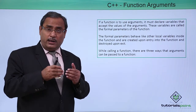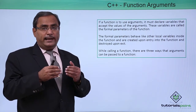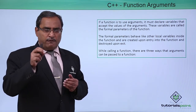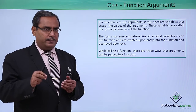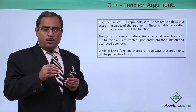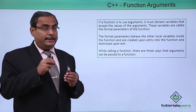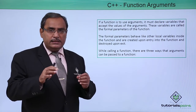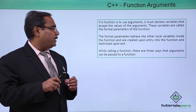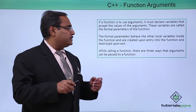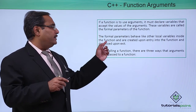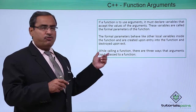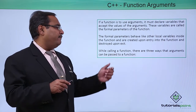When the function gets the control of execution, memory spaces are allocated for those parameter variables. When the function terminates and control comes out from the function, those allocated spaces are released and the variables are deleted from memory. The formal parameters behave like other local variables inside the function — they are created upon entry into the function and destroyed upon exit.